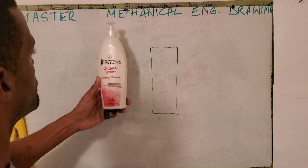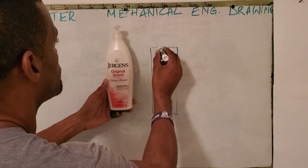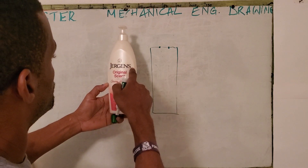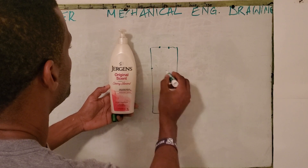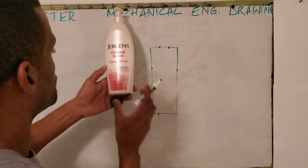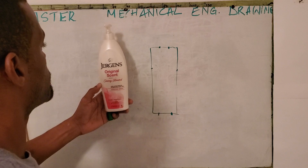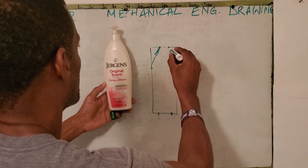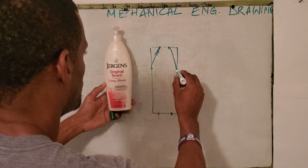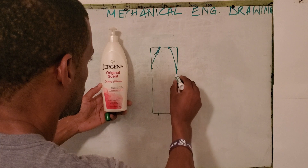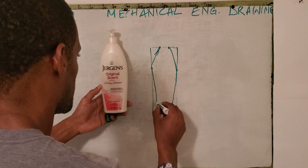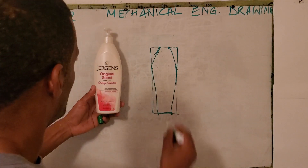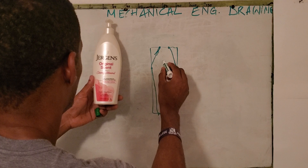From here to there, next I'm going to establish the distance across here. That distance there — and there is a taper here — and the width down here, just that. So now I'm going to sketch this to that, then from here I go down to this and down to that.